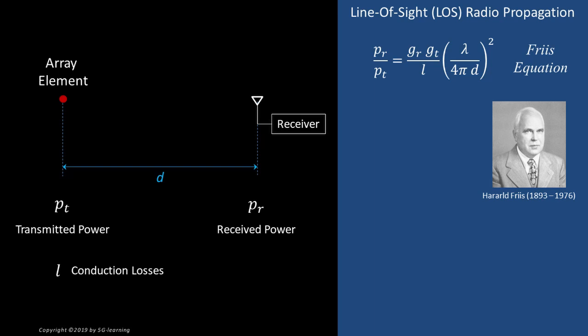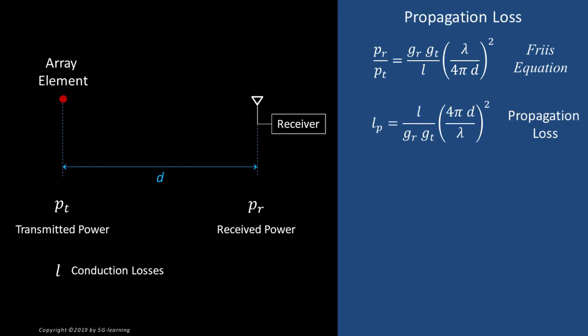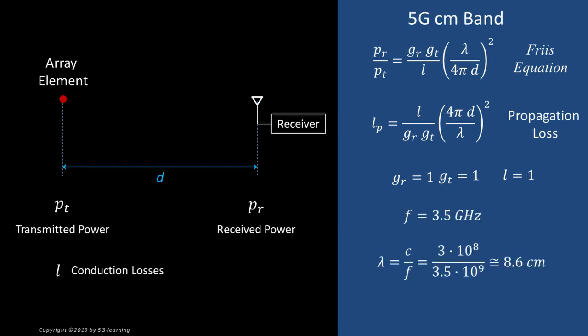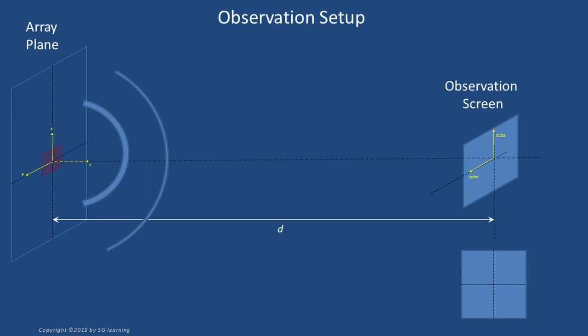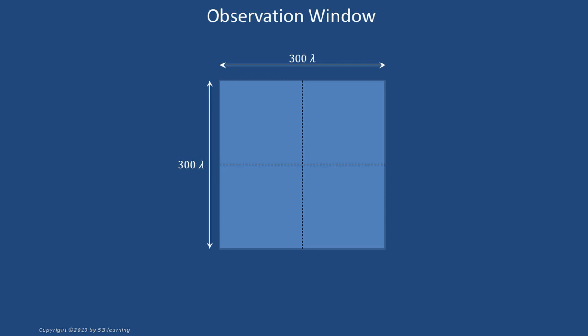In these conditions, the ratio between received and transmitted power is given by the Friis equation. The ratio between transmitted and received powers is called propagation loss. As we assumed omnidirectional radiating elements, Gt and Gr equal 1, and no conduction losses implies L equal to 1. For a typical 5G radio link at 3.5 GHz, the wavelength is 8.6 cm. At a distance of 10,000 wavelengths, the received power from a single element is approximately minus 75 dBm. We consider a square observation window measuring 300 wavelengths on each side, centered on the target and on a plane parallel to the array — approximately 26 by 26 meters at 3.5 GHz.